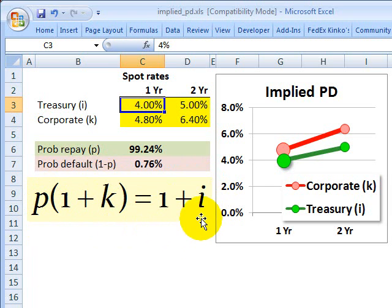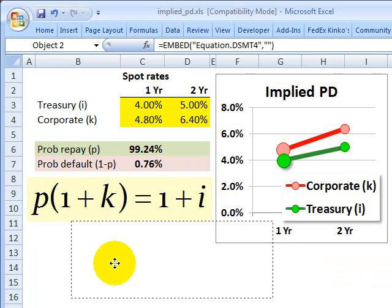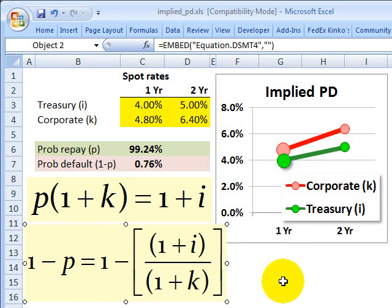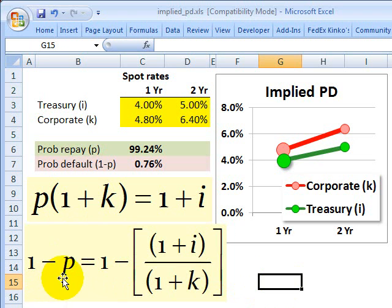We just divide both sides by 1 plus k, and then we make it a 1 minus P in order to get the probability of default, and we end up with this equation.